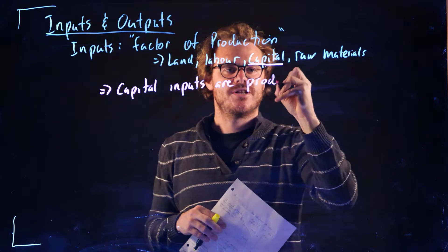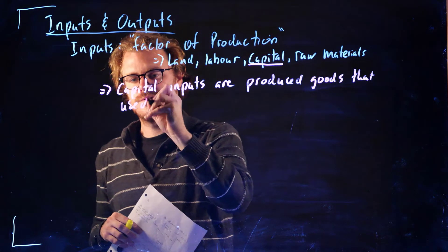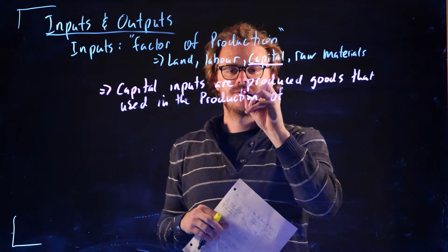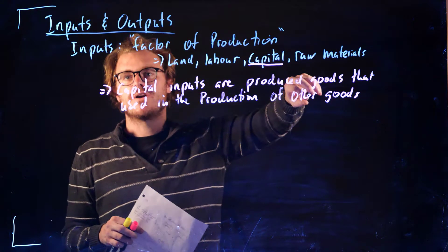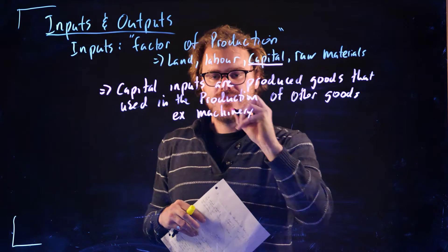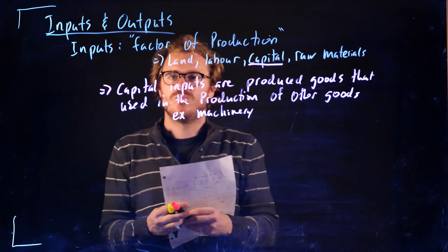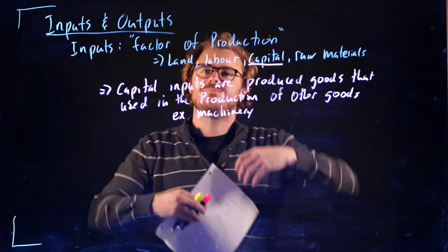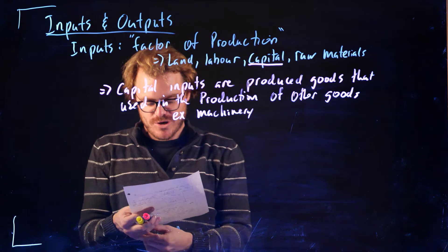Capital inputs are produced goods - goods that are produced by maybe some other company that are used in the production of other goods. Things like machinery and computers are what we might call capital. We want to differentiate - lots of times you might think a startup needs quote-unquote capital. When people say a startup needs capital, you're usually talking about financial capital in order to scale production. Here we're talking about a different kind of capital.